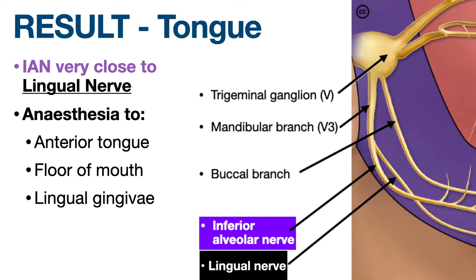Having another look at the anatomy, we can see that the inferior alveolar nerve is very close to the lingual nerve. Often this nerve is also anaesthetised during the ID block. This will result in numbness to the tongue, the lingual gingiva, as well as the floor of the mouth.